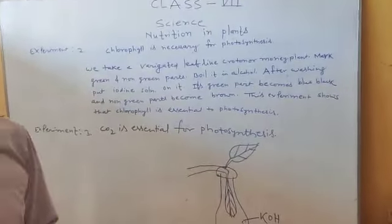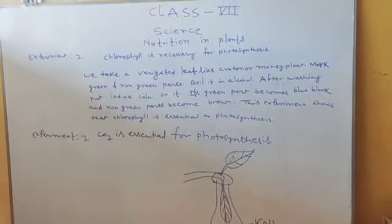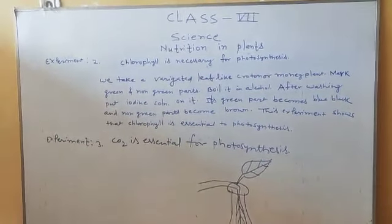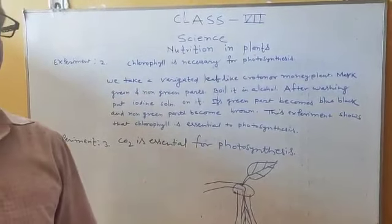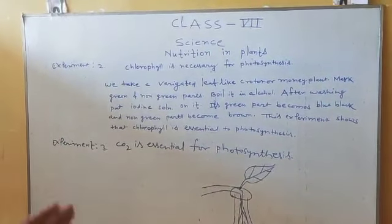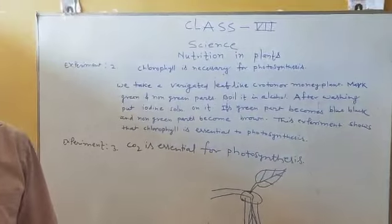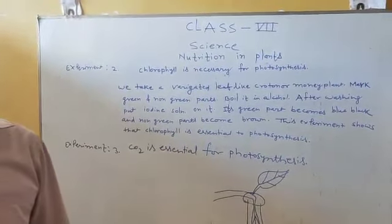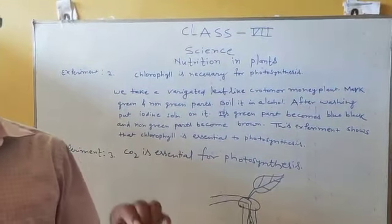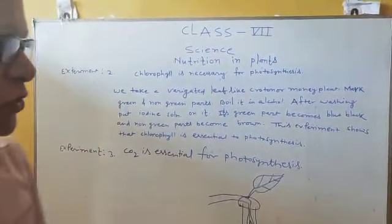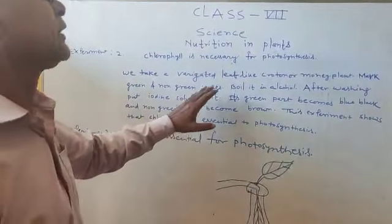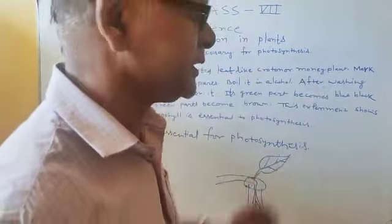A variegated leaf is a leaf which contains both green and non-green parts. If a leaf contains green and non-green parts, then it is called a variegated leaf. We take a variegated leaf — for example, croton or money plant leaf — these are called variegated leaves.